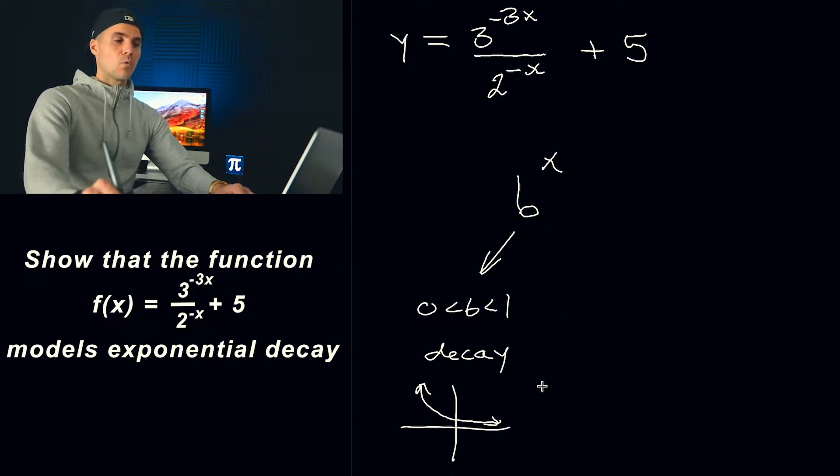So if you have like 1 half to the power of x or 1 over 3 to the power of x or 4 over 5 to the power of x, if b is between 0 and 1 the function is going to be decreasing or in like a word problem it's going to represent a decaying scenario.